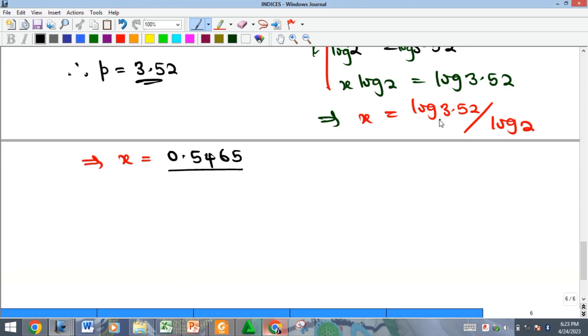Log 3.52 is approximately equal to 0.5465. I have done videos on logarithms. You can use your logarithm table or calculators to get these values. The log of 2 is 0.3010. I took all to four decimal places.